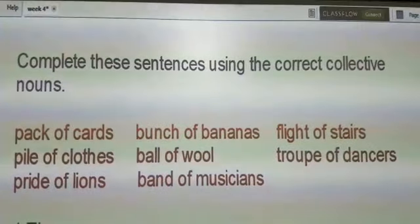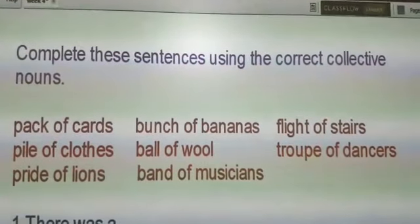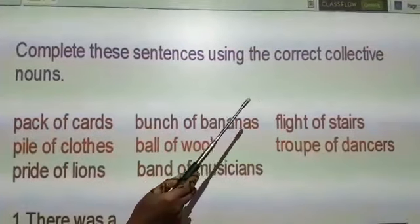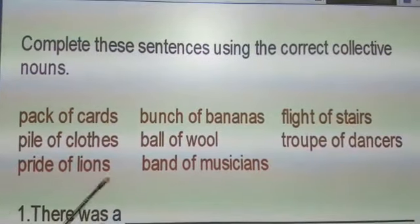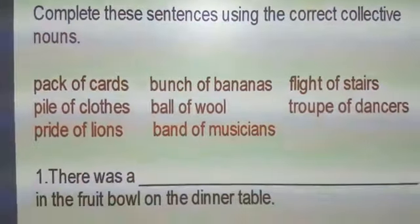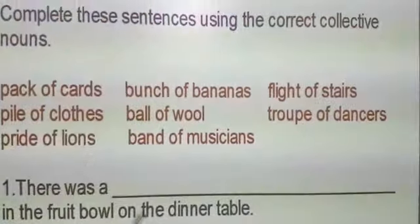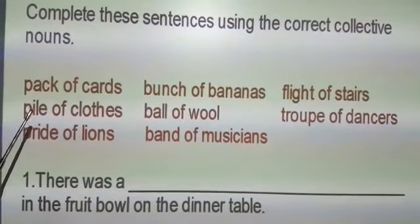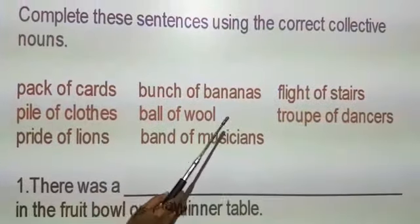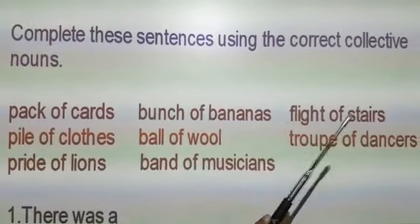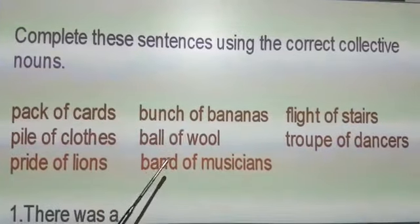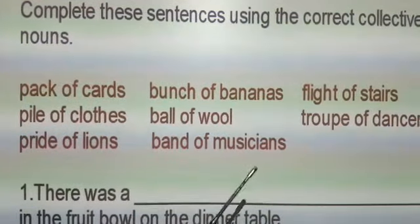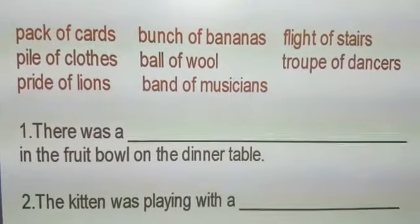Children, this is the workbook vocabulary, page number 18. Complete these sentences using the correct collective nouns. They have given some collective nouns and they have given the sentences. We have to choose the correct collective nouns and fill in the blanks. The options are: pack of cards, bunch of bananas, flight of stairs, pile of clothes, ball of wool, troop of dancers, pride of lions, band of musicians.